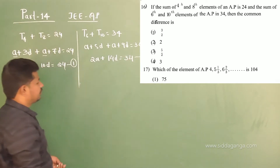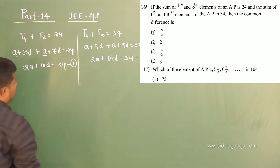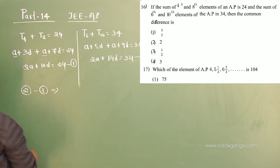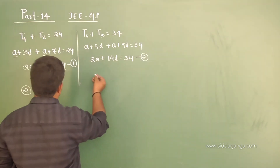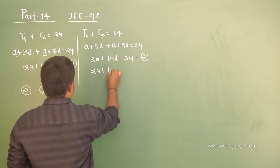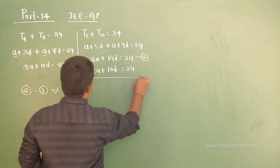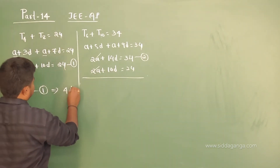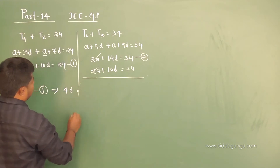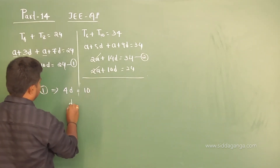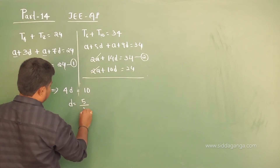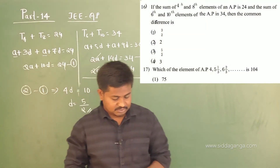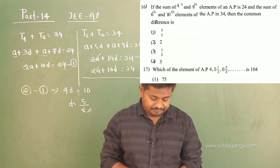Solving these two equations: equation 2 minus equation 1. The 2a terms cancel. 14d minus 10d gives 4d equals 34 minus 24, that is 10. So d equals 10 by 4, which is 5 by 2. So 5/2 is the common difference for the given sequence. Option 3 is the correct one.